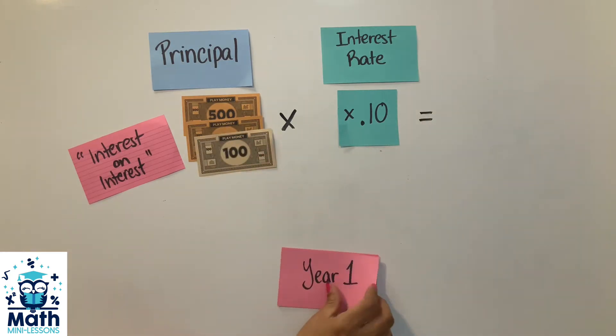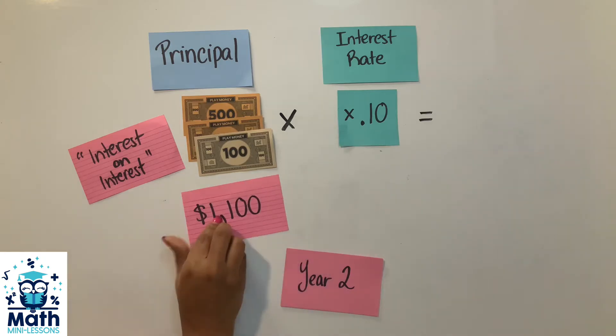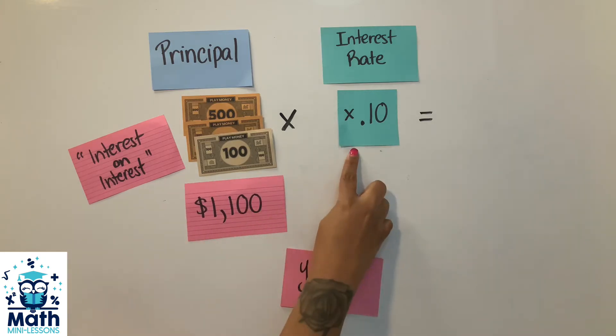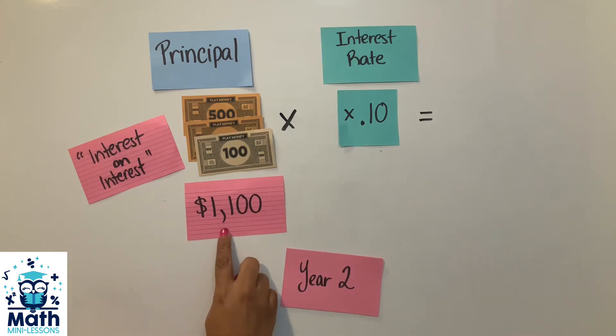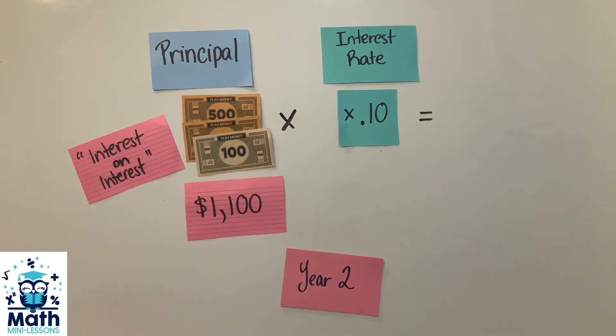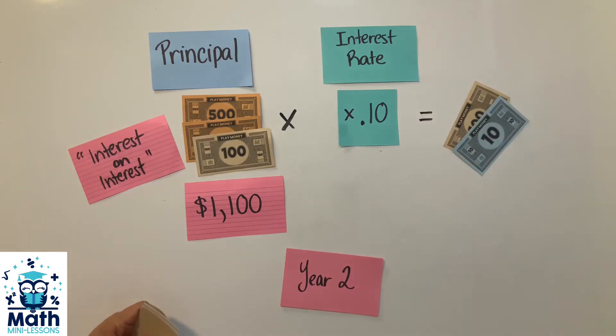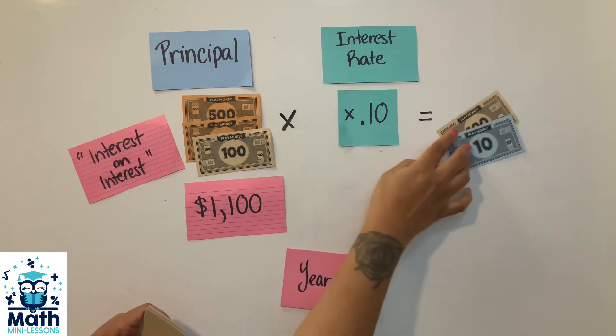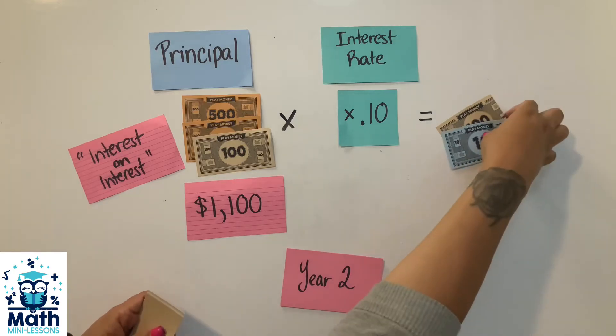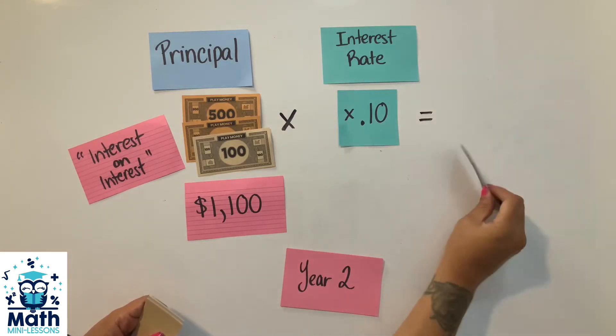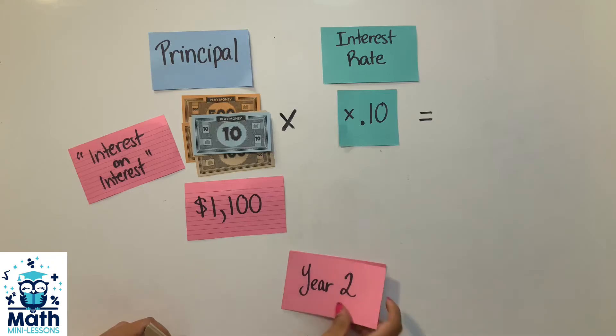If I want to go to year two, I'm finding 10% of this amount - my principal plus my interest - and if I do that in this year, if I find 10%, I'm just paying $110 in interest in my second year. So again, pretend a year passes by, I now add this to my pile.